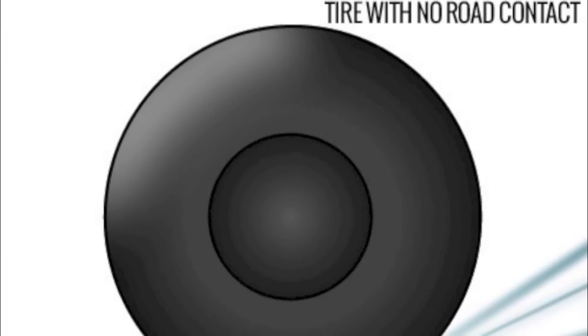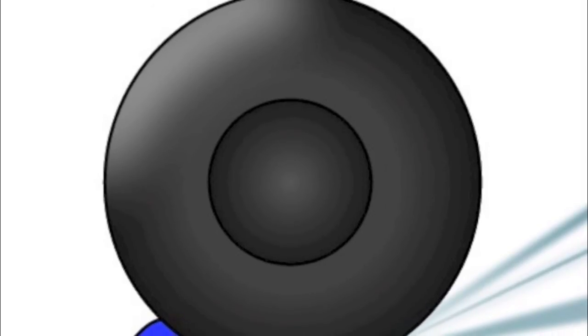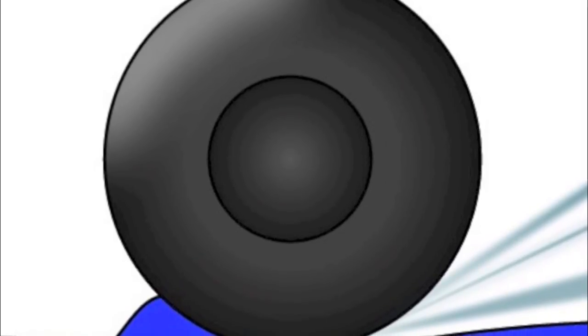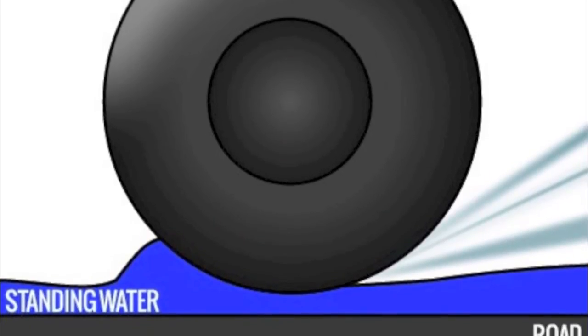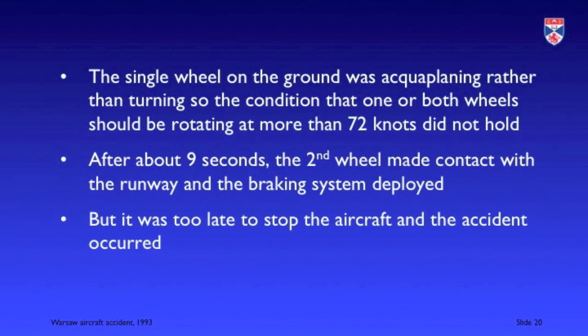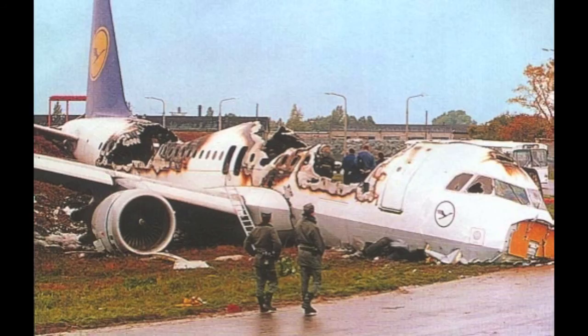The problem was made worse by aquaplaning — when a wheel slides along a film of water on a runway rather than turning, so it skids and is not rotating as expected. In this case the single wheel on the ground was aquaplaning; although that was slowing the aircraft somewhat, it wasn't enough. After nine seconds, sufficient time had elapsed, the other wheel came down, and the braking system could be deployed — but it was too late to stop the aircraft, and the accident occurred.